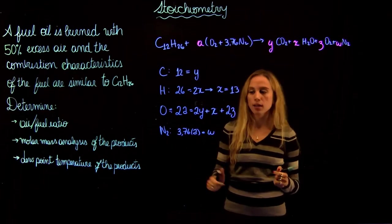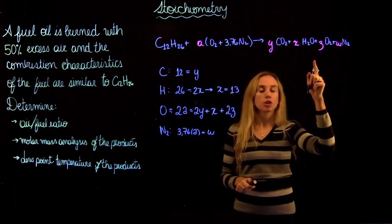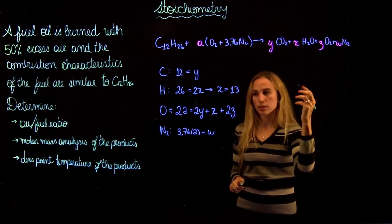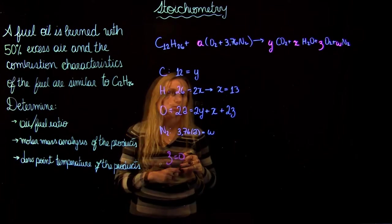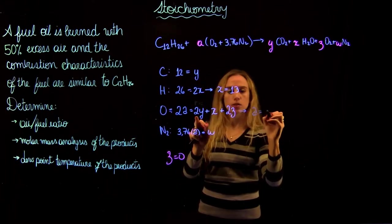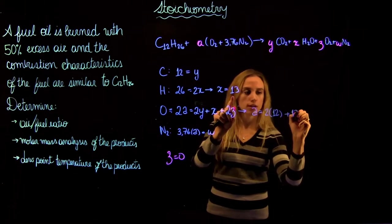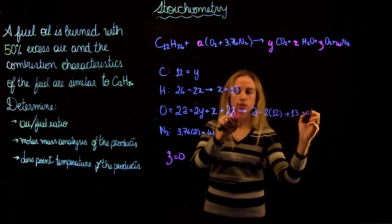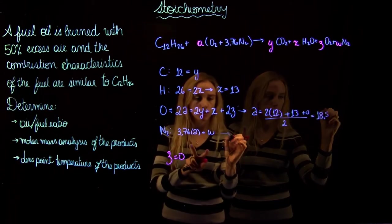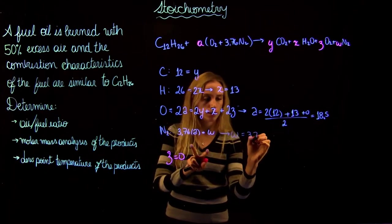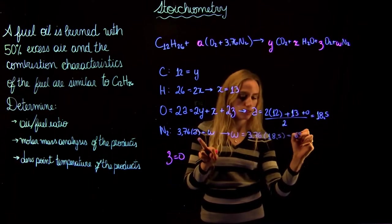When we do combustion analysis with theoretical air, we assume the excess oxygen Z is zero. Setting Z = 0, we find A = (2Y + X) / 2 = (2×12 + 13) / 2 = 18.5. Then W = 3.76 × 18.5 = 69.56. So we have found the combustion reaction using theoretical air.